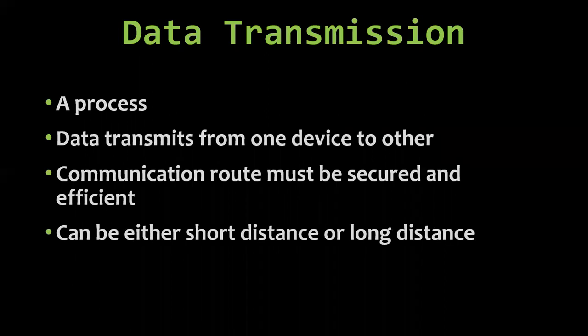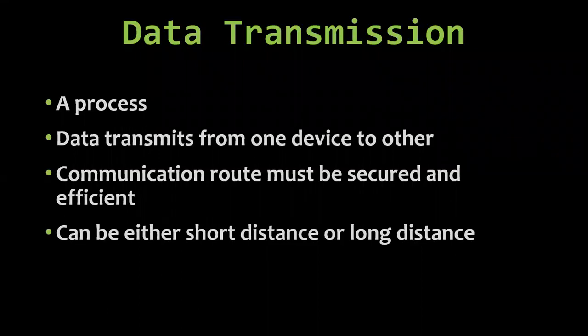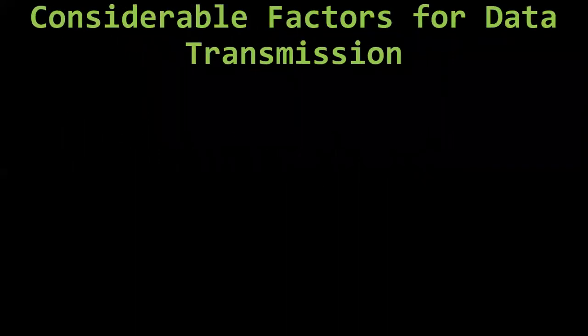Data movement can be based on short distance or long distance. Short distance means inside the CPU — from RAM to hard disk, from hard disk to processor, to cache, to registers. Long distance data movement means data traveling from outside devices like keyboard, mouse to monitors, printers, and speakers. These are considered long distance devices connected with the help of cables.